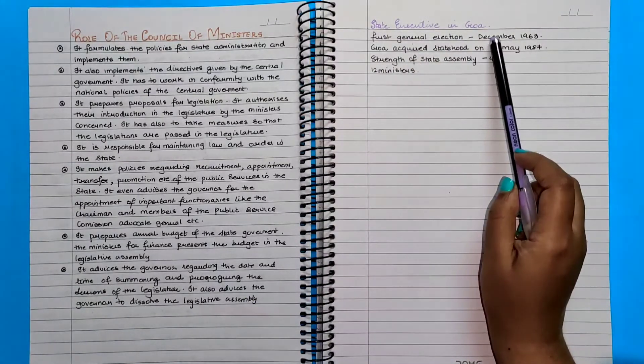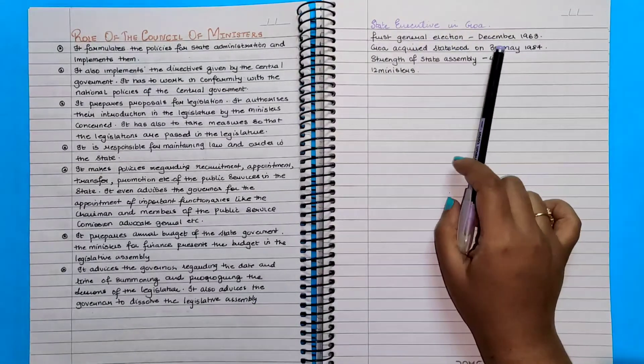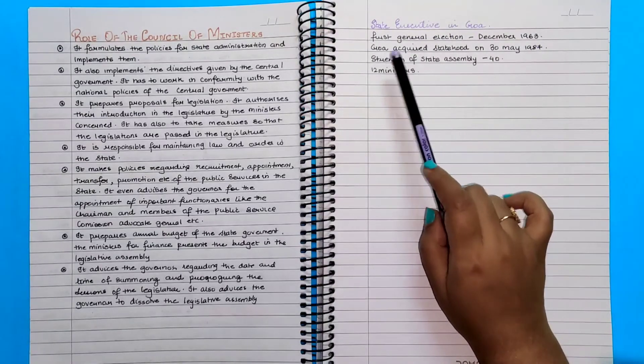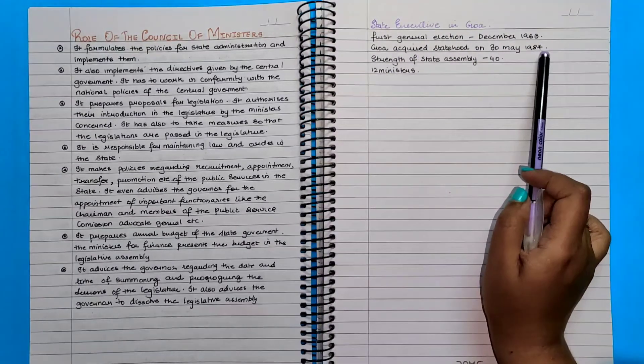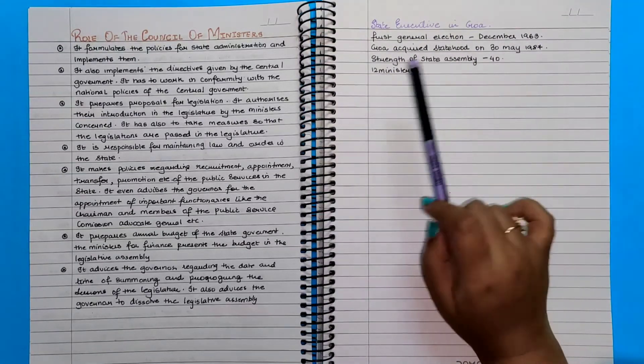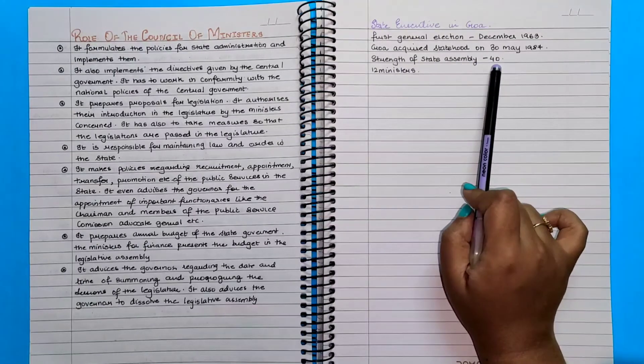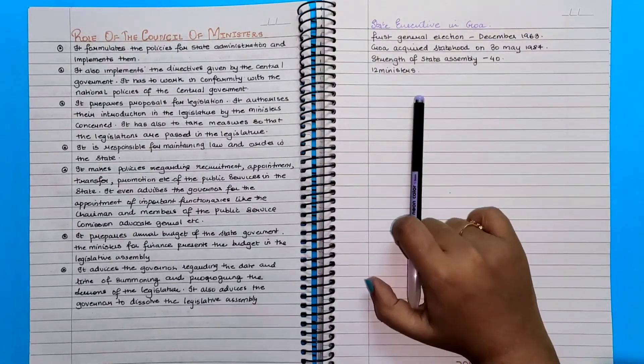State executive in Goa: The first elections were held in December 1963. Goa acquired statehood on 30 May 1987. The strength of the state assembly is 40 and there are 12 ministers in the council.